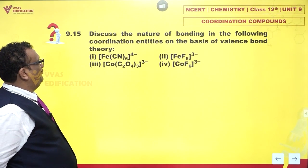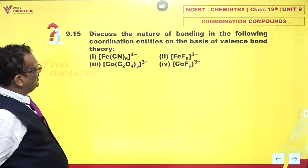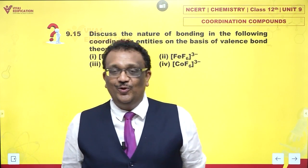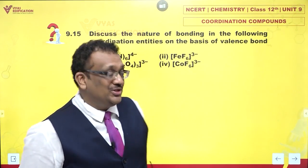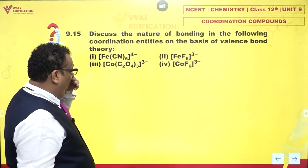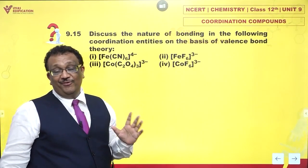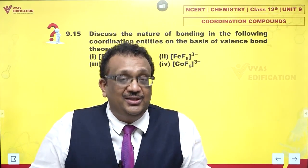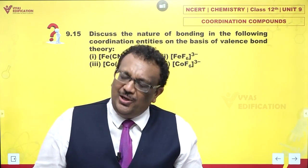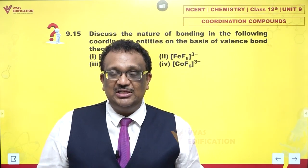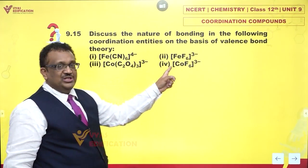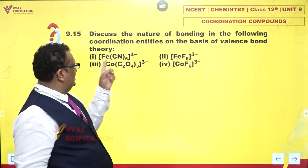Discuss the nature of bonding in the following coordination entities on the basis of valence bond theory. Let's take a look at the process - if you know the steps in the process of description, I think you would find this very easy. Let me list out the steps one by one. We will take two questions at a time.